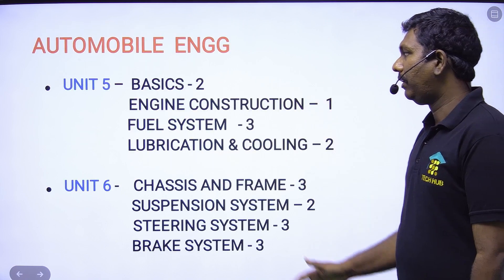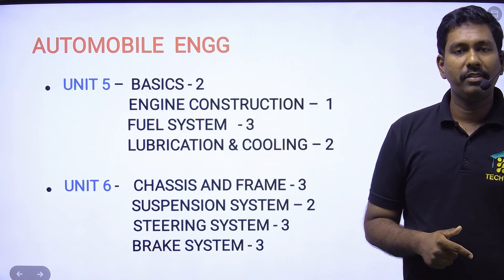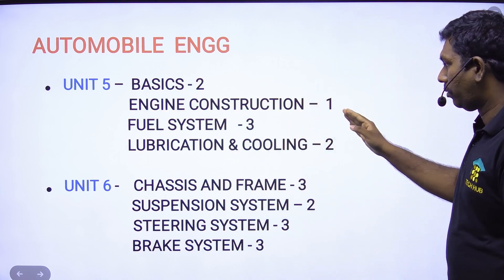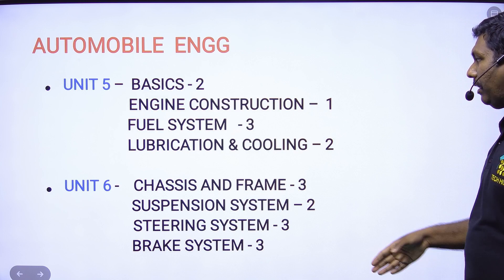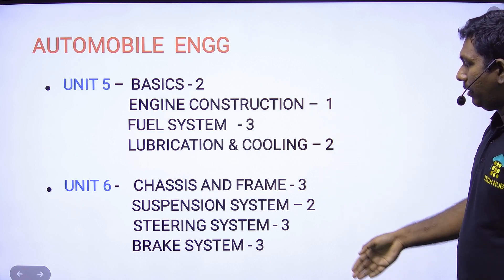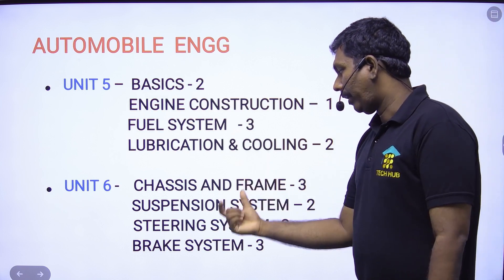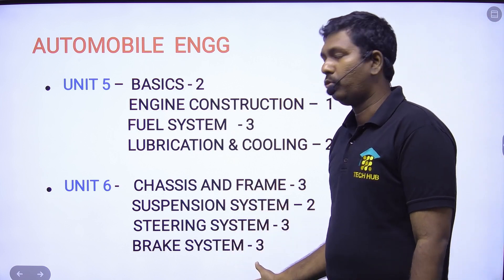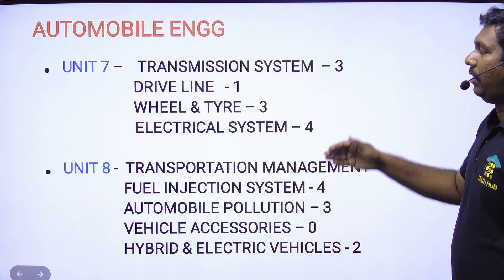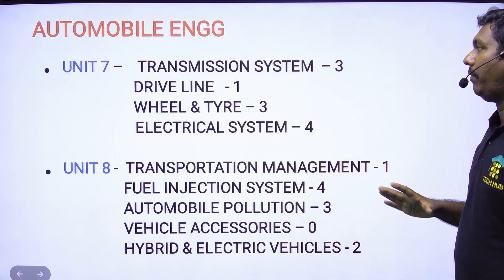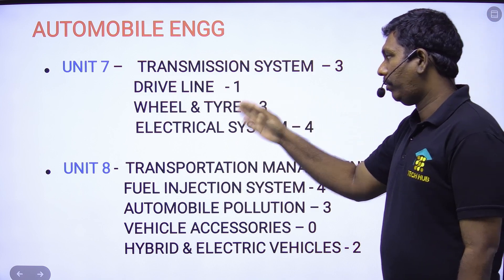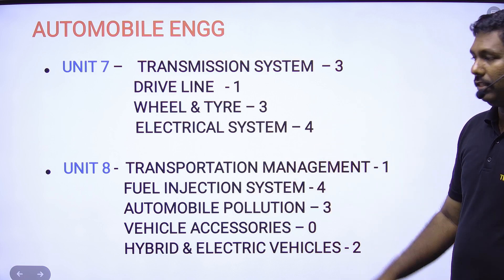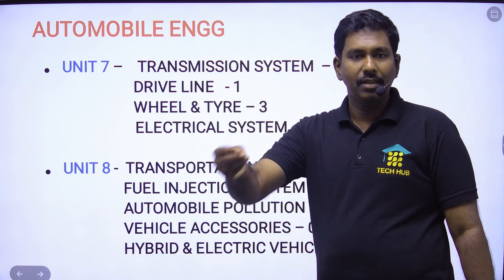We don't have the basic engine. The engine construction, fuel system 3. The simple air is very simple. The chassis is very simple. The suspensions are 2. The steering is 3. The brakes are 3. The dividend comes from 6. The transmission system is 3. The driving system is 3. The wheel and tire is 3. The electrical system is 4 — a small number of electrical systems.